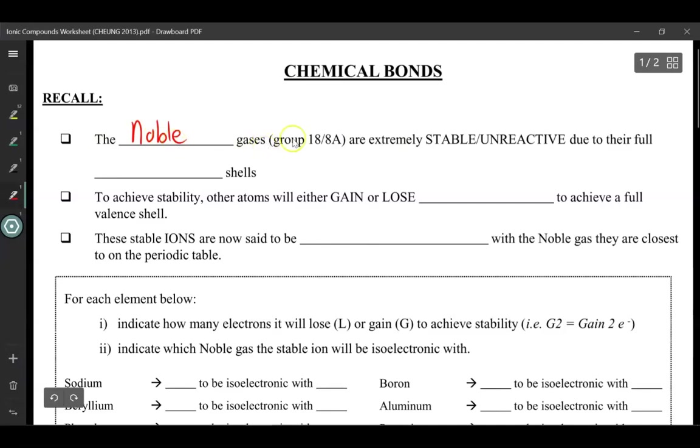The noble gases of group 18 or 8A are extremely stable or unreactive due to their full valence shells. To achieve stability, other atoms will either gain or lose electrons to achieve a full valence shell. The stable ions are now said to be isoelectronic with the noble gas they are closest to on the periodic table.